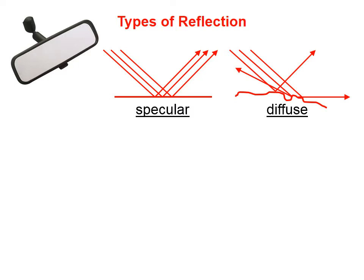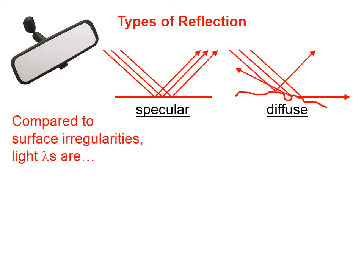Mirrors, for example, exhibit specular reflection. How to tell if reflection is going to be specular or diffuse depends on the size of light's wavelengths compared to the surface irregularities of the object.